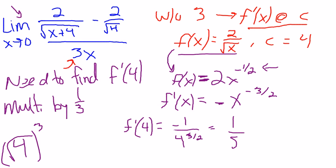So it's 1 over 8, but it's negative. Now I need to take care of this piece. I need to multiply by 1 third. So my answer is equal to negative 1 over 8 times 1 over 3, which is negative 1 over 24.